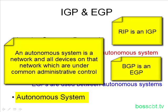Of course, you have many different autonomous systems — many different companies doing many different things. In order for these autonomous systems to function within themselves, they use IGPs to exchange routing information internally. Then they use EGPs to share information between different autonomous systems. So if Company A and Company B want to talk, they use an EGP like BGP.